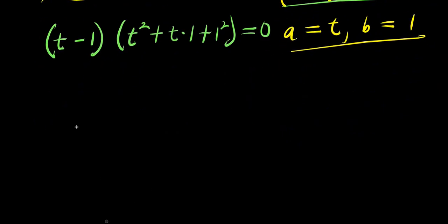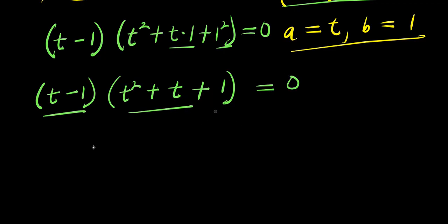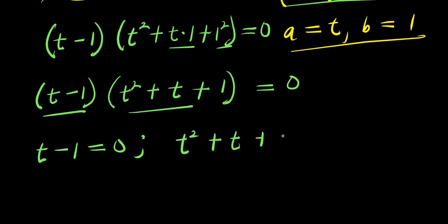So from here, I will have (t minus 1) times (t squared plus t times 1) — that is t — plus 1 squared, which is 1, and this equals 0. So I will have t minus 1 equals 0, and I will also have t squared plus t plus 1 equals 0.